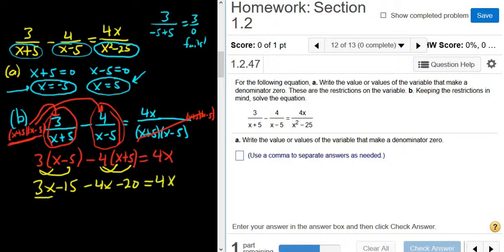Combining like terms, 3x minus 4x is minus x. Negative 15 and negative 20 give us negative 35. And that's equal to 4x. Almost there. Let's go ahead and maybe add the x to both sides. That gives us negative 35. And then 4x plus x is 5x.